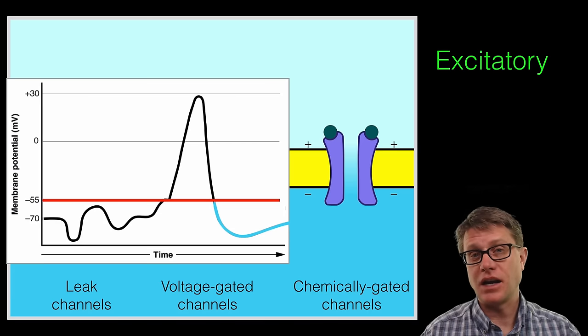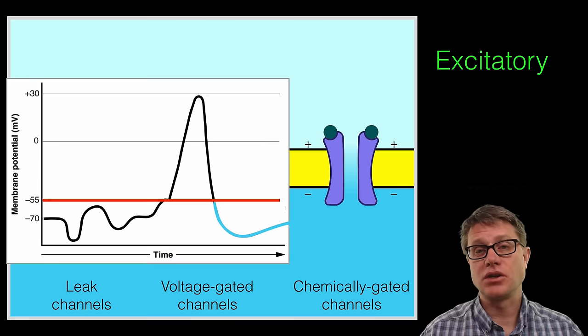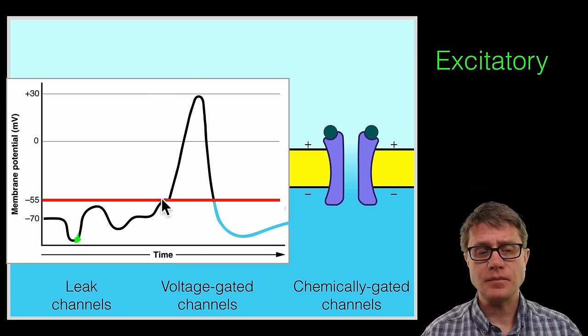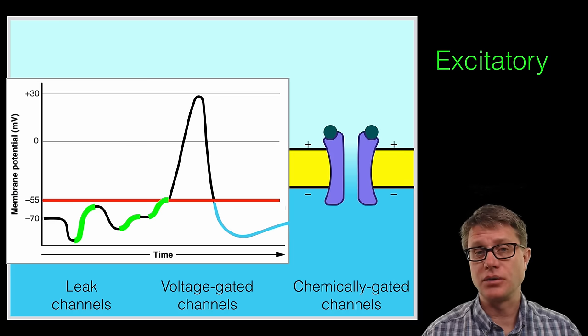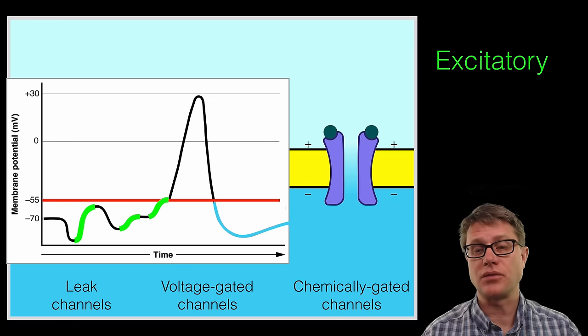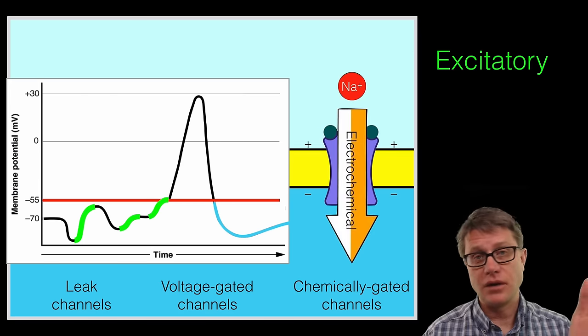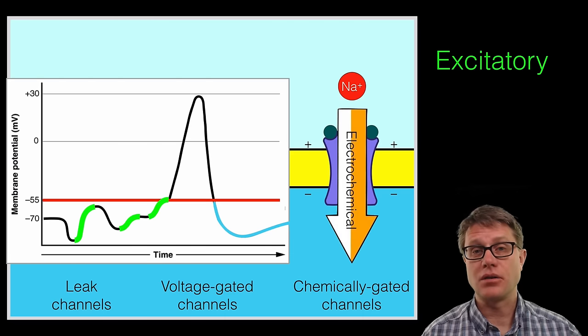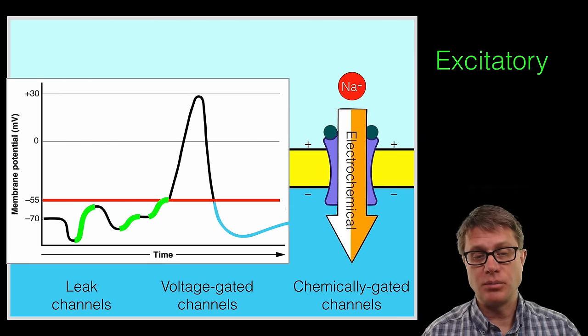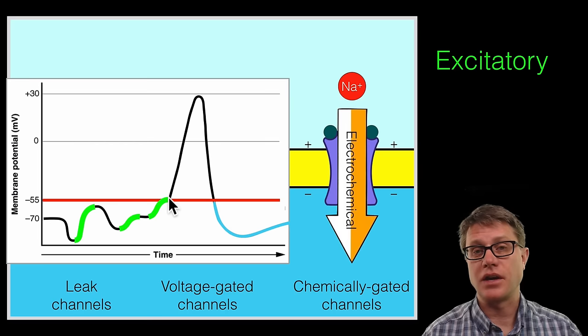But what can happen in an excitatory neurotransmitter, a neurotransmitter that is pushing us towards the threshold, is that it is increasing the voltage. It is moving it closer to that threshold. What is a quick way to do that? If we have a receptor on the postsynaptic side that allows the flow of sodium into the neuron. That sodium is quickly going to depolarize the neuron and move us closer to the action potential.